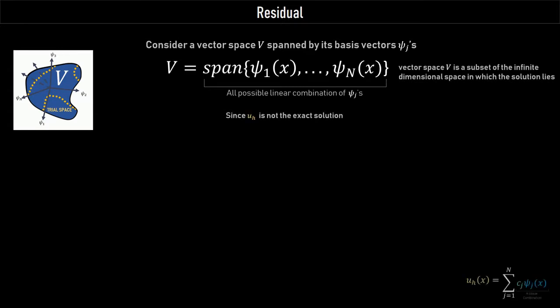The vector space V, the trial space, is a subspace of the infinite-dimensional space in which the actual solution lies. The UH that we are actually solving for is not the exact solution.